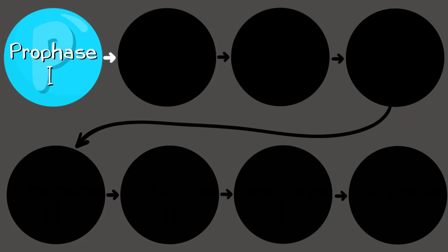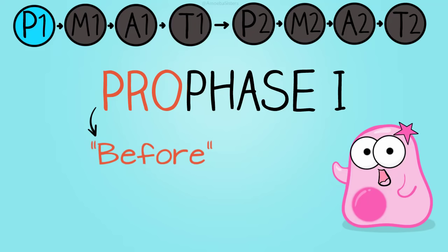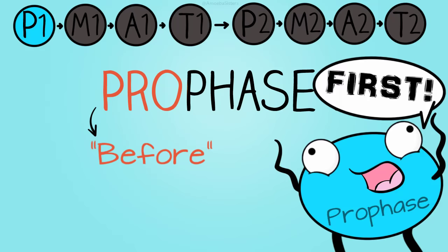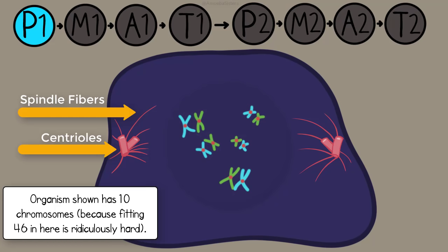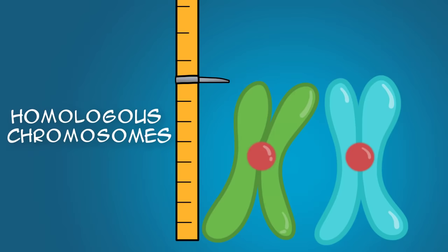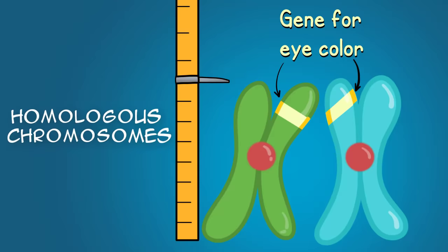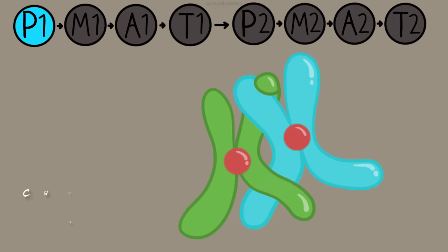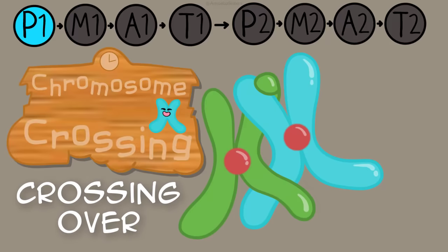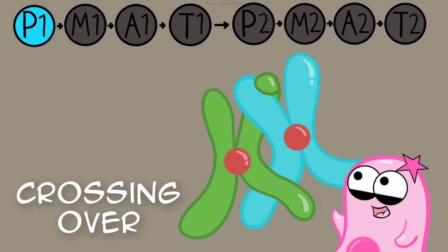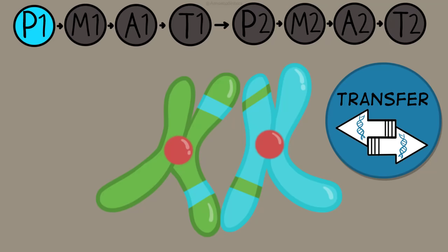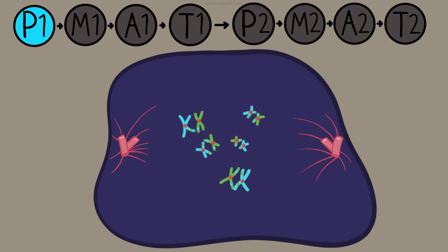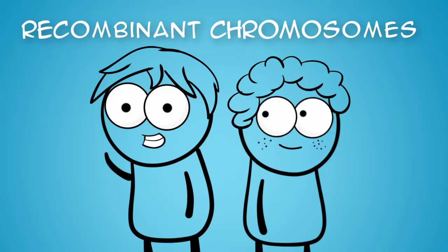Let's start with the very first step: prophase 1. 'Pro' means before, which helps you remember it comes before all the other stages. This is where the chromosomes condense and thicken, and they line up with their homologous pairs. Homologous means the chromosomes are approximately the same size and contain the same types of genes in the same locations. During prophase 1, an amazing process called crossing over occurs — the chromosomes, lined up in homologous pairs, transfer and exchange genetic information between each other, creating recombinant chromosomes that contribute to the variety siblings can have even with the same parents.